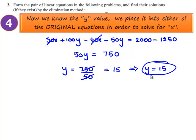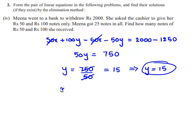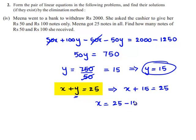In order to obtain the value of X, let us substitute the value of Y in equation number 1, which is X plus Y equals 25. That implies X plus 15 is equal to 25. So X is equal to 25 minus 15, which is nothing but 10. Therefore, we got the value of X as 10.